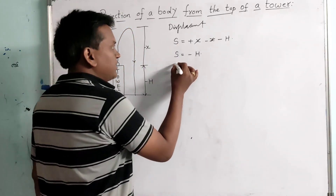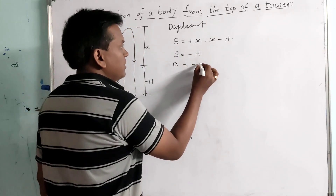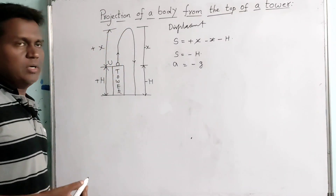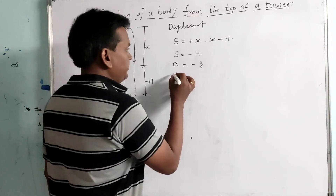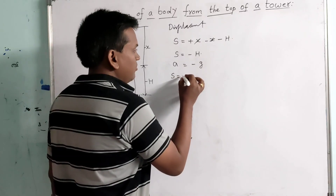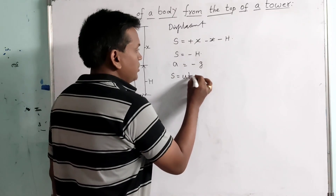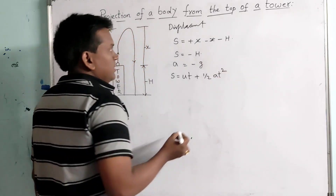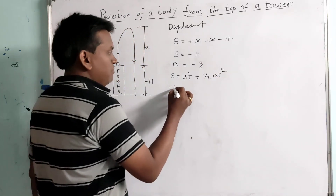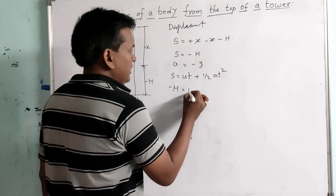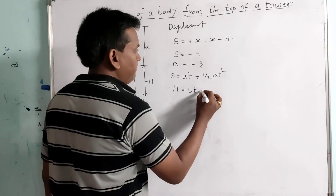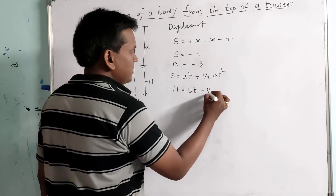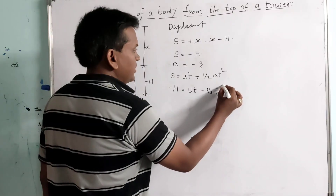The acceleration of the body, A equals minus G, since we are projecting it upward. Taking the second equation of motion, S equals UT plus half AT squared. So substituting, minus H equals UT minus half GT squared.